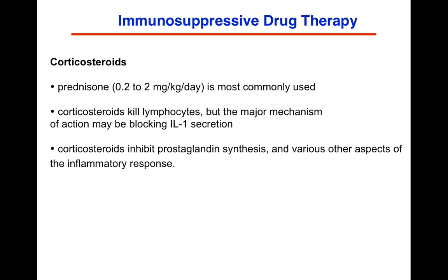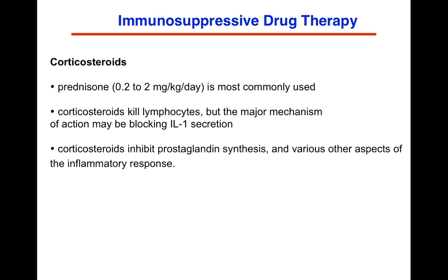The first real drug developed that truly targeted the immune system is corticosteroids, and prednisone is the most commonly used. It's basically a prodrug of hydrocortisone. The way it works is it kills lymphocytes fairly selectively, but the major mechanism may be blocking IL-1 secretion, which activates immune cells. Corticosteroids inhibit prostaglandins and various other aspects of the immune response — this is why when you have an injury, bursitis, or inflammatory disease, a shot of corticosteroids vastly reduces your ability to produce molecules like prostaglandins that lead to inflammation.